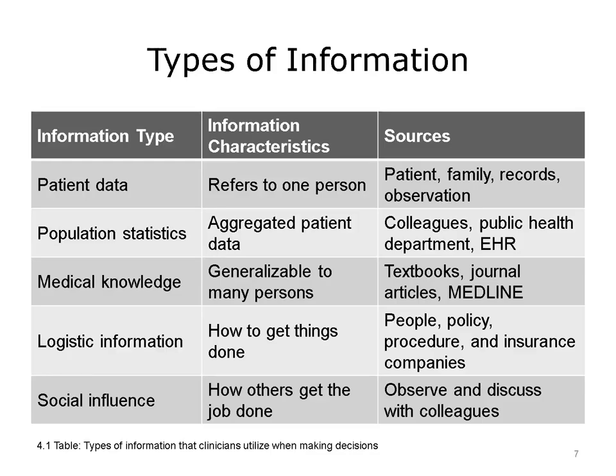Insurance companies play a key role in care logistics, for example by identifying preferred physicians and health care providers, covered and non-covered services, and other non-clinically-based community services. The fifth type of information that physicians often use is called social influence, or the impact of others' job performance on the clinician's decisions. Clinicians may not always conform exactly to the practices of others, but in general they like to know how other clinicians are managing particular problems and whether their own practices align relatively well with those of others. In studying clinicians and their reasoning and decision-making processes, it's helpful to remember that all of these types of information may be brought to bear at various stages of the process.